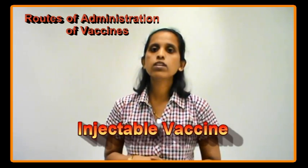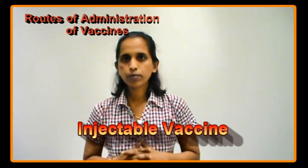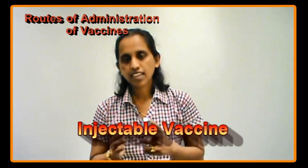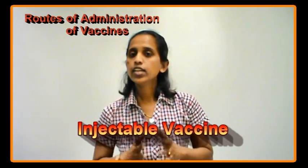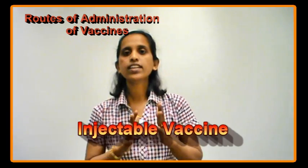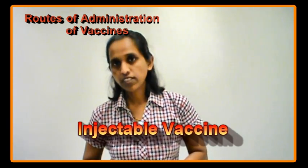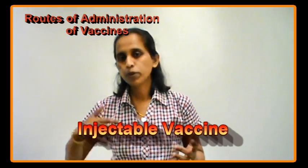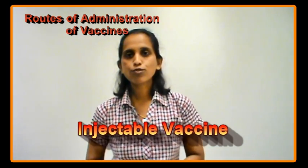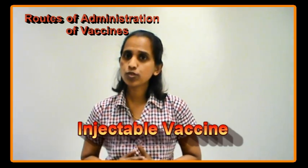Let's move on to the injectable route of administration. As mentioned, it requires needles and syringes as equipment. It is also a skill — the way it has to be administered must be carefully noted, otherwise the side effects of the vaccine would be greater than intended. Let's look at the subtypes of the injectable routes of administration.